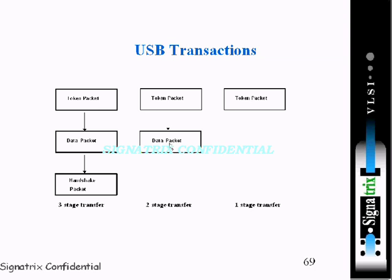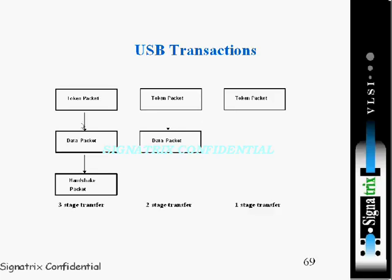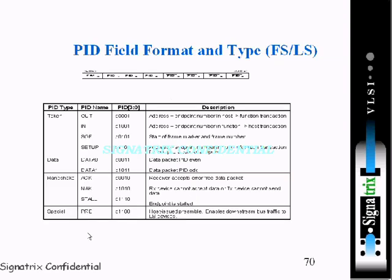When we talk about a two-stage transfer, it is a token packet and then a data packet — the handshake is not included. This is another particular transaction. A one-stage transfer would be just the token packet, and this is again another transaction. So we are dealing with three types of transfers: three-stage, two-stage, and one-stage.